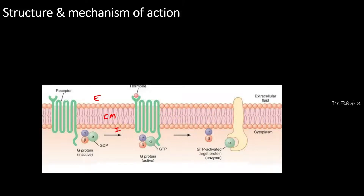As we are seeing, this is a transmembrane receptor and it is having an extracellular part and it is also having an intracellular part. But the most interesting part about this receptor is that it is traversing the cell membrane seven times. Shall we count it — this is number 1, 2, 3, 4, 5, 6, 7. So it is traversing the cell membrane seven times.